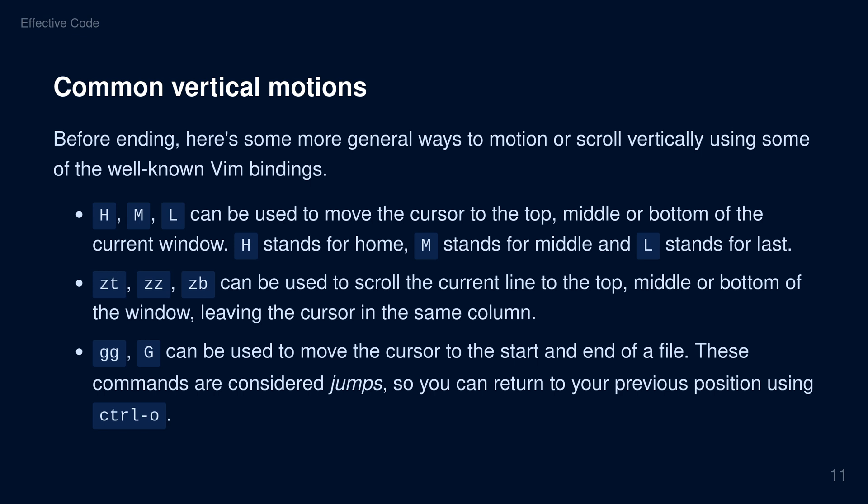5. Common vertical motions. Here are some more general ways to motion or scroll vertically using some of the well-known Vim bindings. Capital H, M, and L can be used to move the cursor to the top, middle, or bottom of the current window. H stands for home, M stands for middle, and L stands for last.